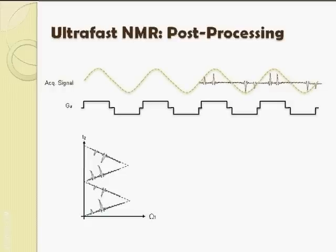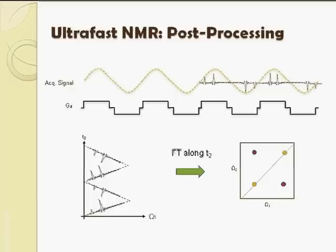All we need to do is to Fourier transform along the T2 axis to obtain our desired 2D spectrum, that is, to make the chemical shift's evolution transparent.